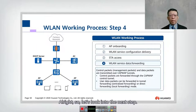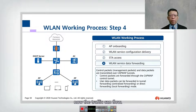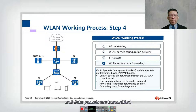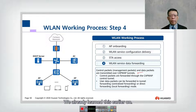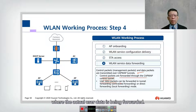Let's look into step number four: WLAN service data forwarding. Once we go through steps one, two, and three, the traffic can flow. In this slide we look into how control packets, management packets, and data packets are transmitted over the CAPWAP tunnel. We have a control packet forwarded through the tunnel and also a user data packet where the actual user data is being forwarded.